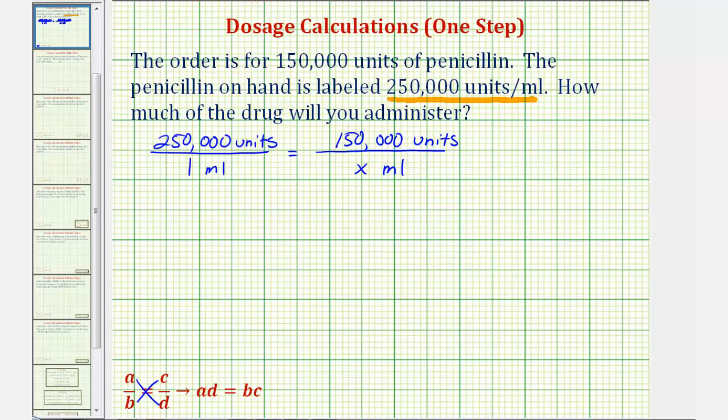Now from here, before we cross-multiply, notice how the units on top in the numerator are both units, and the units in the denominator are both milliliters. This is important to recognize, because if they weren't the same, we'd have to perform an additional conversion before cross-multiplying. So now we'll cross-multiply.